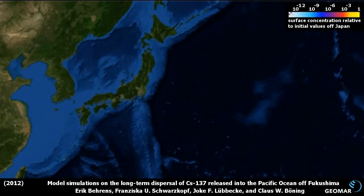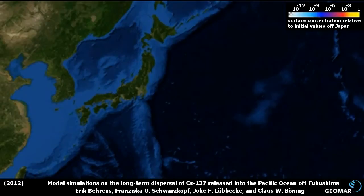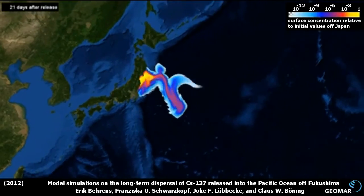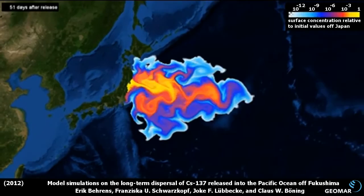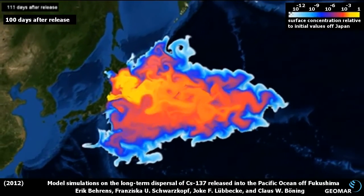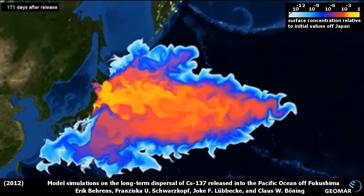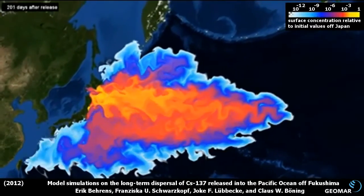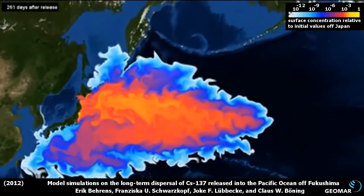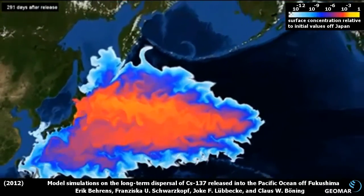The following animation shows the spreading of our dye at the ocean surface. The color represents the concentration of the tracer relative to the initial concentration in the coastal area of Fukushima at the end of the injection period. The tracer invades the highly energetic Kuroshio regime within the first weeks after the release and starts spreading meridionally due to the eddies dominating the flow field in this area.